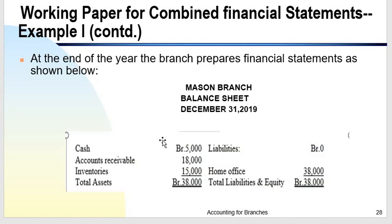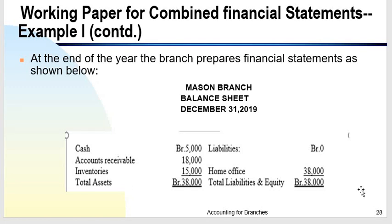For the branch balance sheet: remaining cash is $5,000; accounts receivable is $18,000; inventory is $15,000. There are no liabilities for the branch, so the equity account is only the home office account. Since assets equal liabilities plus owner's equity, and there are no liabilities, total assets equal the home office account balance — which serves as the equity account of the branch.